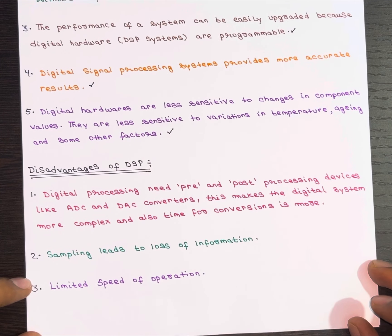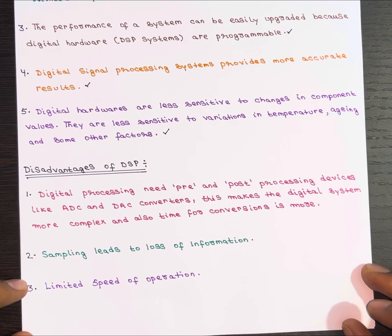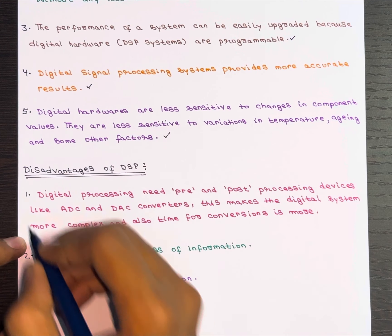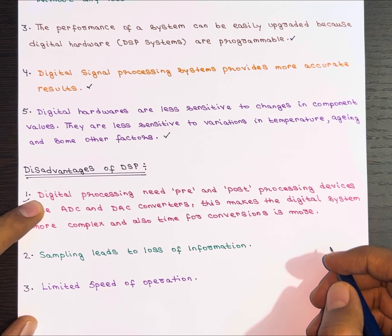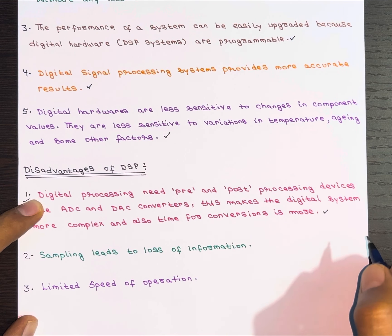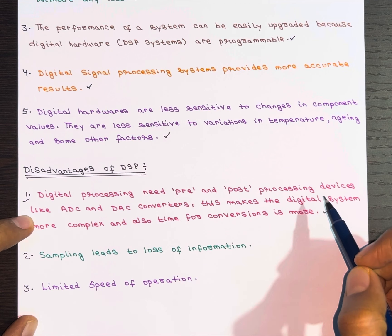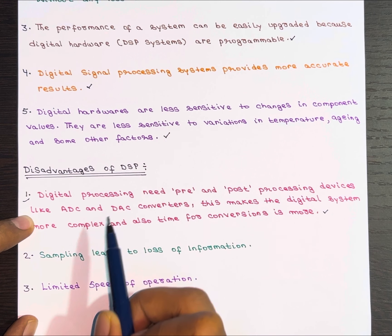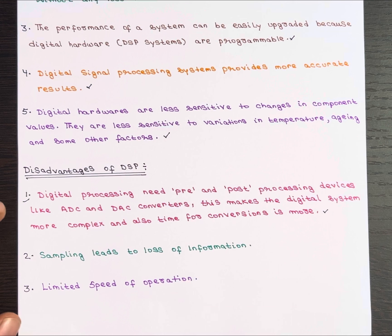Now let's move on to the disadvantages of DSP. First, digital processing requires additional devices like ADC and DAC converters, which makes the system more complex and the conversion process takes some time.